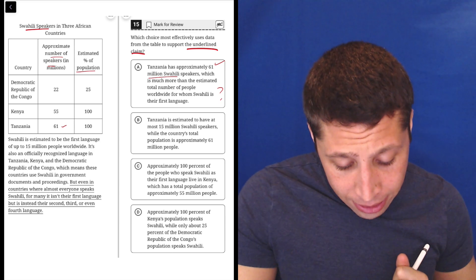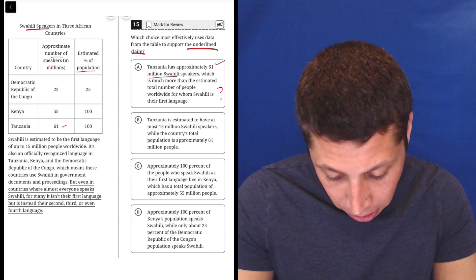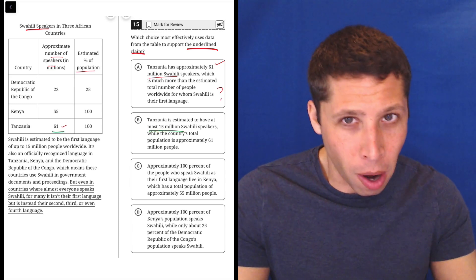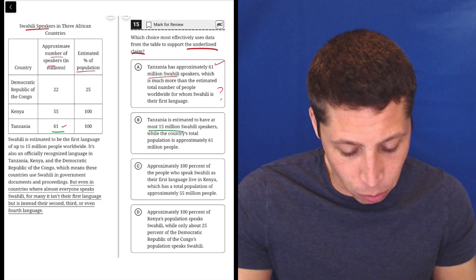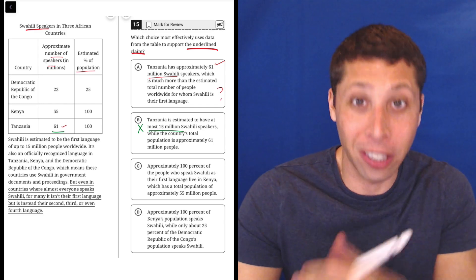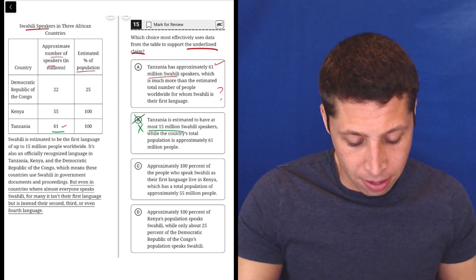Choice B. Tanzania is estimated to have at most 15 million Swahili speakers. Well, no. We literally just said that that was wrong, right? It says it's 61 million Swahili speakers. So it does not have at most 15 million. The chart literally says it's 61 million. So just get rid of that. That's wrong.